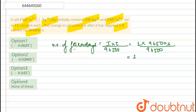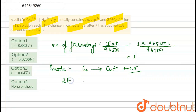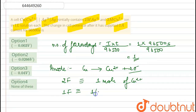At the anode, the reaction taking place is Cu → Cu²⁺ + 2e⁻. Two electrons are released, so 2 Faradays of electricity produces 1 mole of Cu²⁺. We have only 1 Faraday, so the moles of Cu²⁺ produced = 1/2 = 0.5 moles.